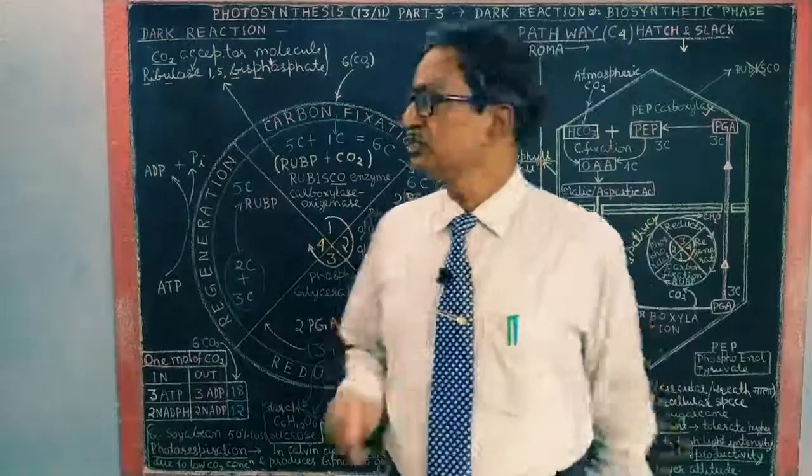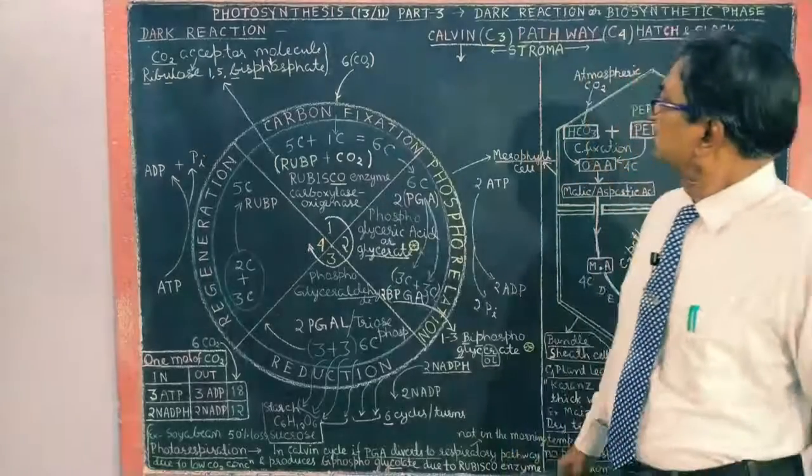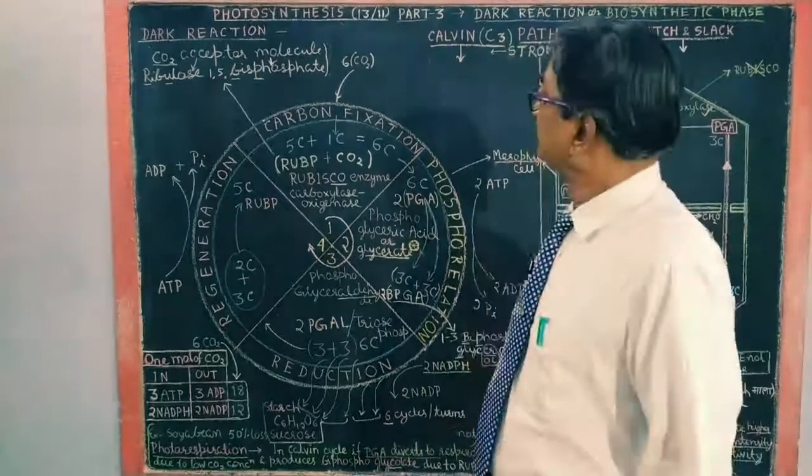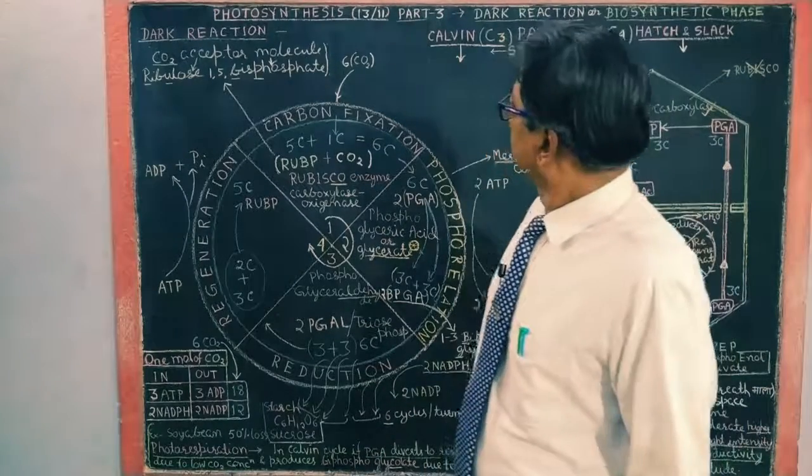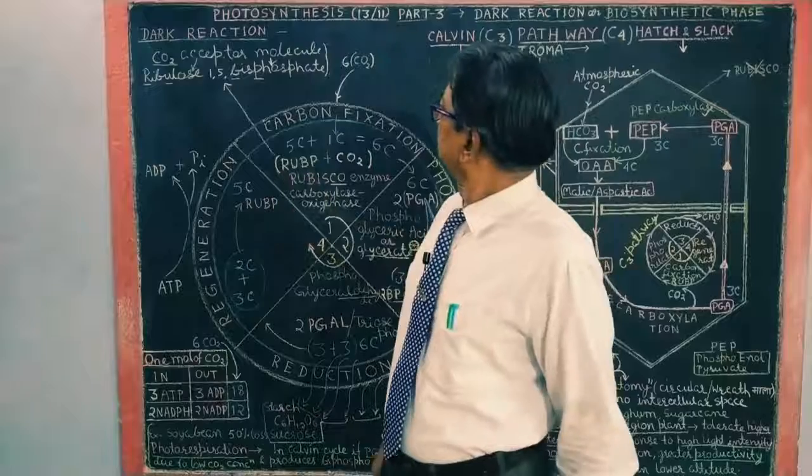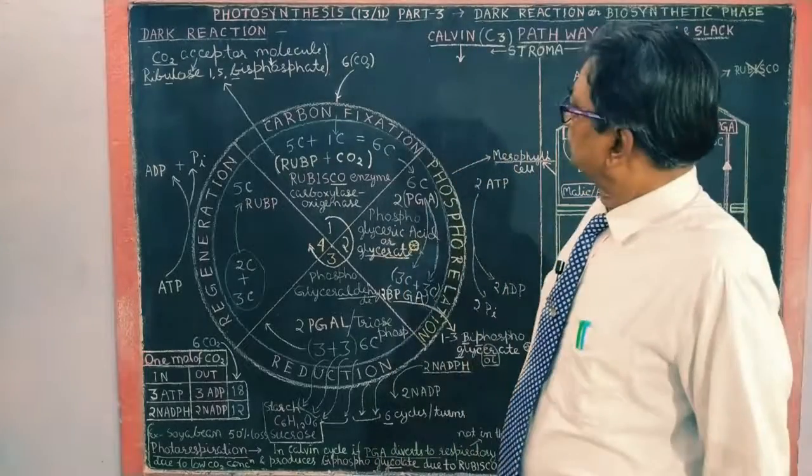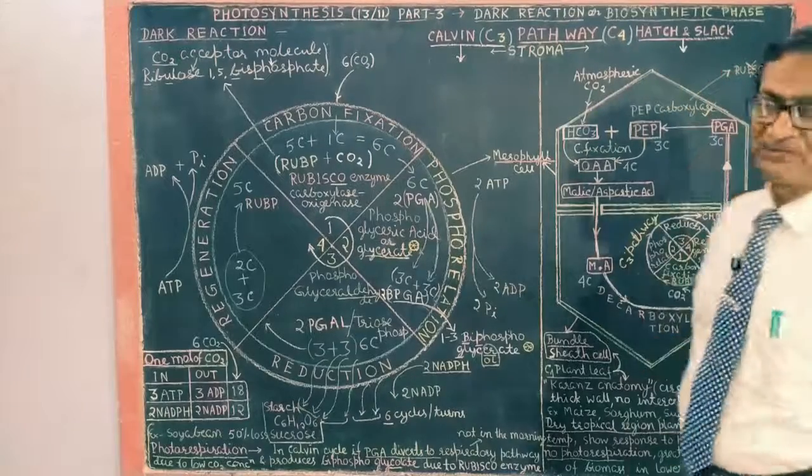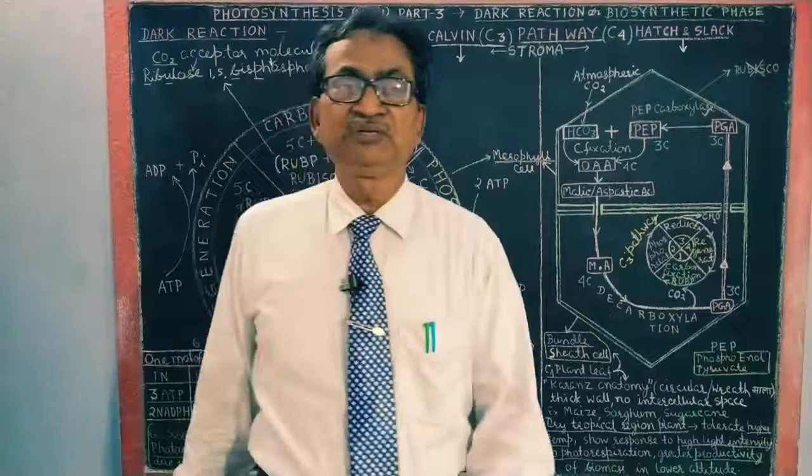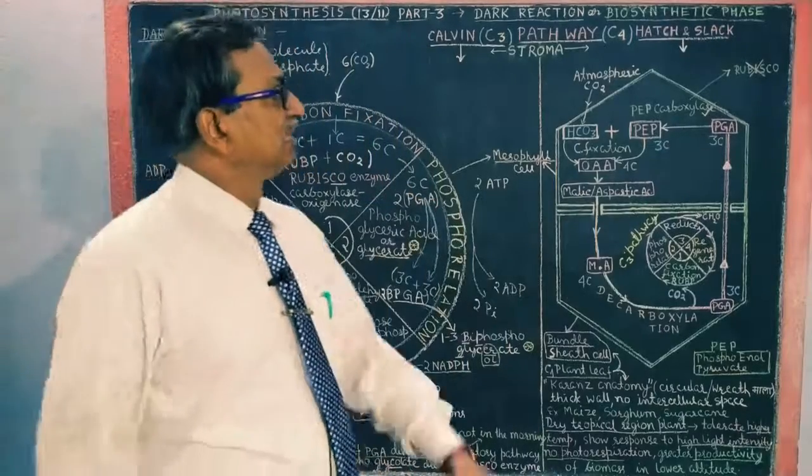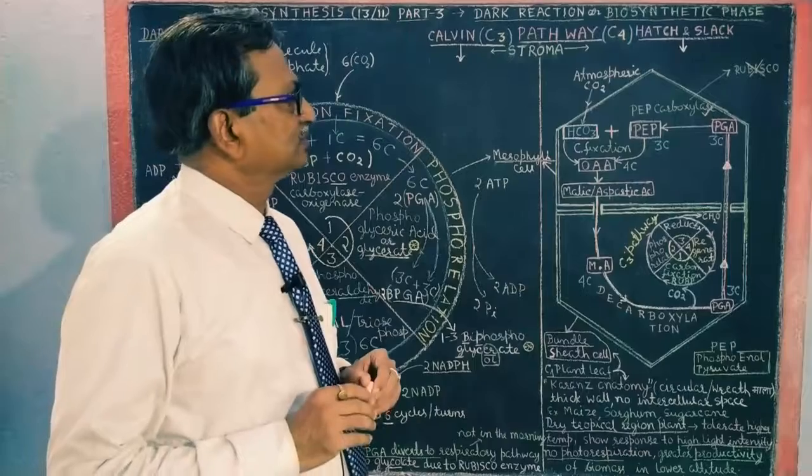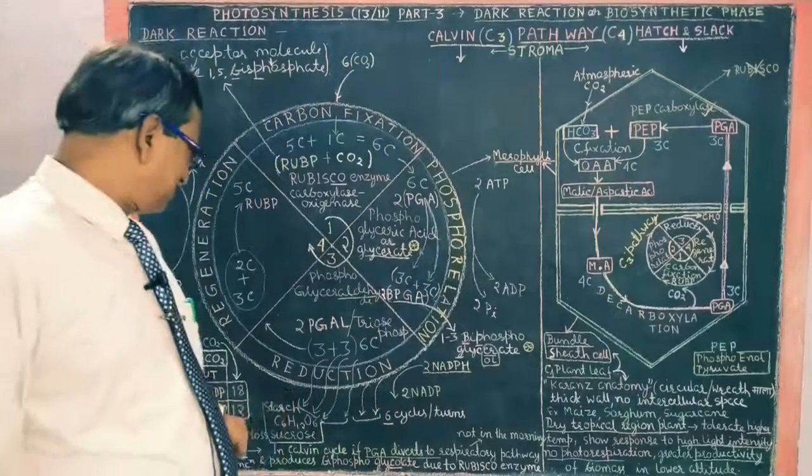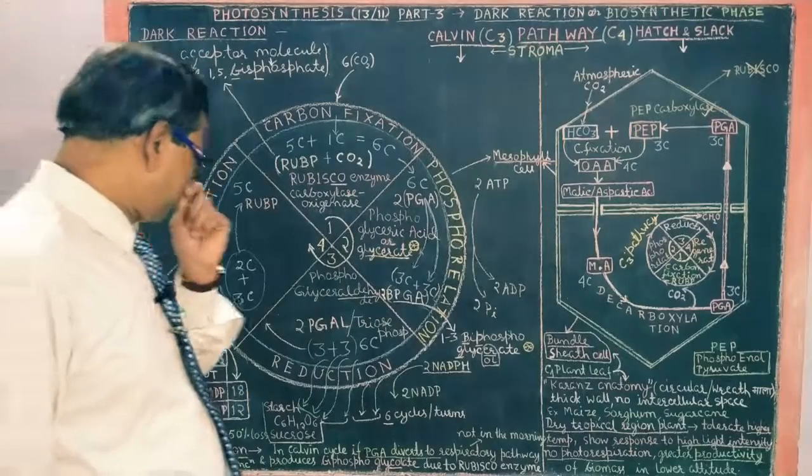Dear friends, we will study photosynthesis dark reaction. It is part 3, our third video of this chapter, chapter 13 for 11th. Under this we will study dark reaction or which is called biosynthetic phase. Biosynthetic phase means at the last of this cycle the product will be starch or sucrose or glucose.